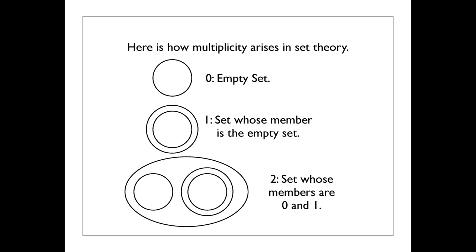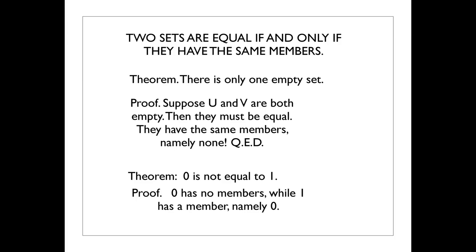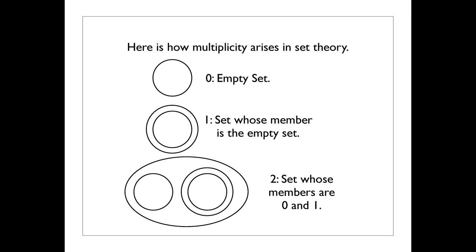And I will cartoon then the set whose member is an empty set by a circle inside a circle. And the set whose members are 0 and 1, calling the first two sets 0 and 1, the set whose members are 0 and 1 is thereby the circle surrounding a circle and a circle within a circle. And you'll notice I'm not using commas here. We can discriminate the members of these simple sets without having to use commas. So then the basic principle for set theory is that two sets are equal if and only if they have the same members. And then you have a basic theorem that there's only one empty set. On the proof, suppose you had two sets that were both empty. Well, then they must be equal because they have the same members, none.